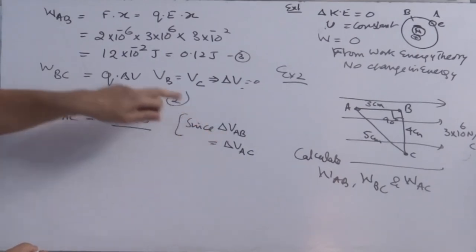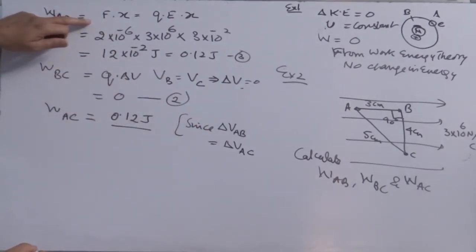Therefore, you can write since potential difference between A and B is equal to potential difference between A and C. Charge into potential difference into A, B. You can use this formula here also. You have already calculated work done.